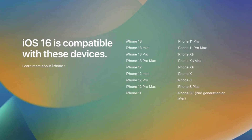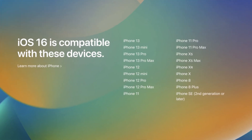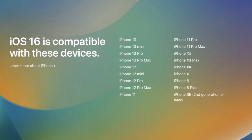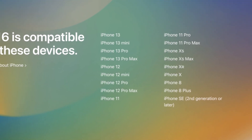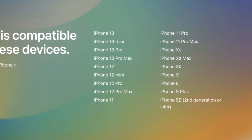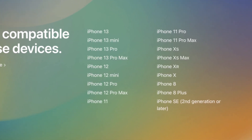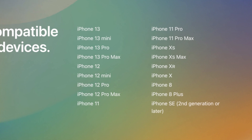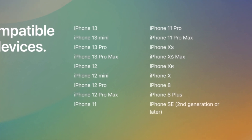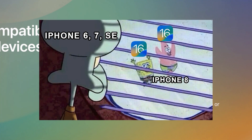First, we need to know what kind of device is supported by iOS 16. Looks like iOS 16 no longer supports devices older than iPhone 8 — might be the hardware limit. So the iPhone 6 and iPhone 7 are getting abandoned. Sad, but let's move on.